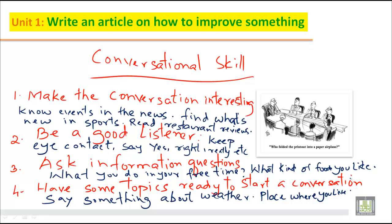To summarize: we write the topic sentence, and we have chosen four topic sentences here — make the conversation interesting, be a good listener, ask information questions, and have some topics ready to start a conversation. Then add one or two related ideas with each topic sentence. This is all for today. Hope you have got enough ideas. See you in the next class, thank you so much.